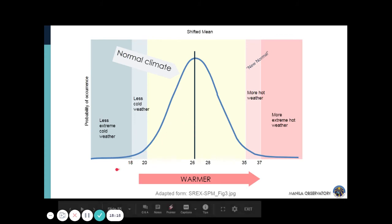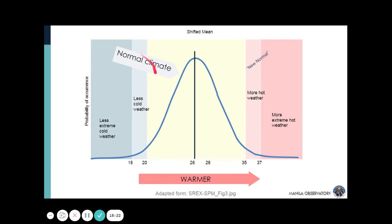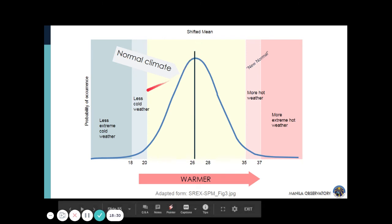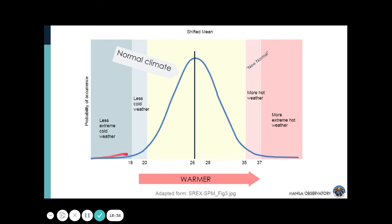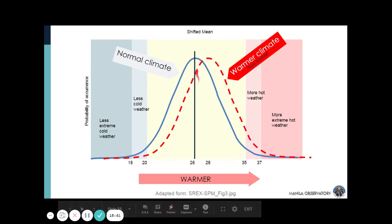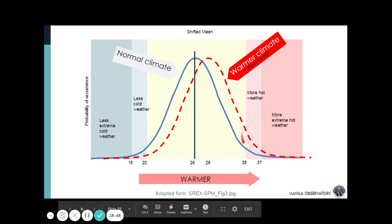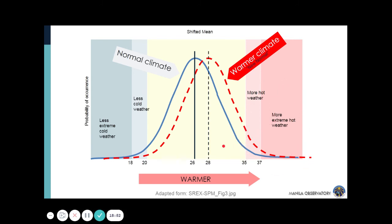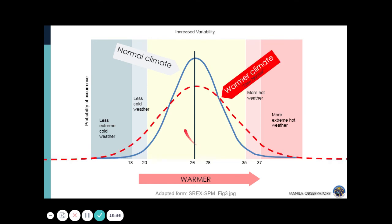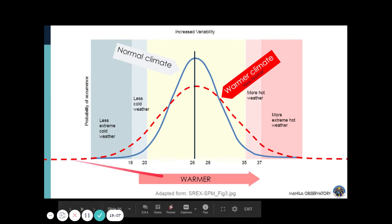Another way to look at the impacts of global warming in terms of temperature: this is our normal climate with our average temperature, our less extreme cold weather temperature, and our extreme hot weather temperature. In a globally warmer world, it can shift towards a higher average temperature and an increase in extreme temperature and weather. It can also increase not only the extreme hot temperature conditions but also the colder extreme weather conditions.